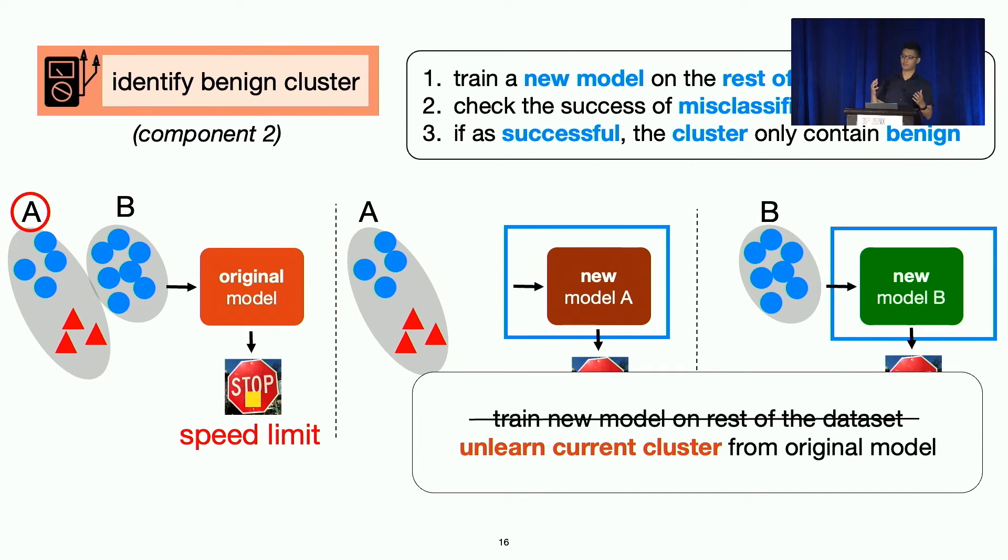So rather than training a new model from scratch on the rest of the training data, what we're going to do is we're going to unlearn or remove the training effect of the current cluster from the original model that we have access to. And this will speed things up. And unlearning, of course, is explored in the privacy setting. A lot of proposals already exist. But unfortunately, they're still too expensive for our purpose. Simply because they're not designed for this task. The task of unlearning a large amount of training data again and again.